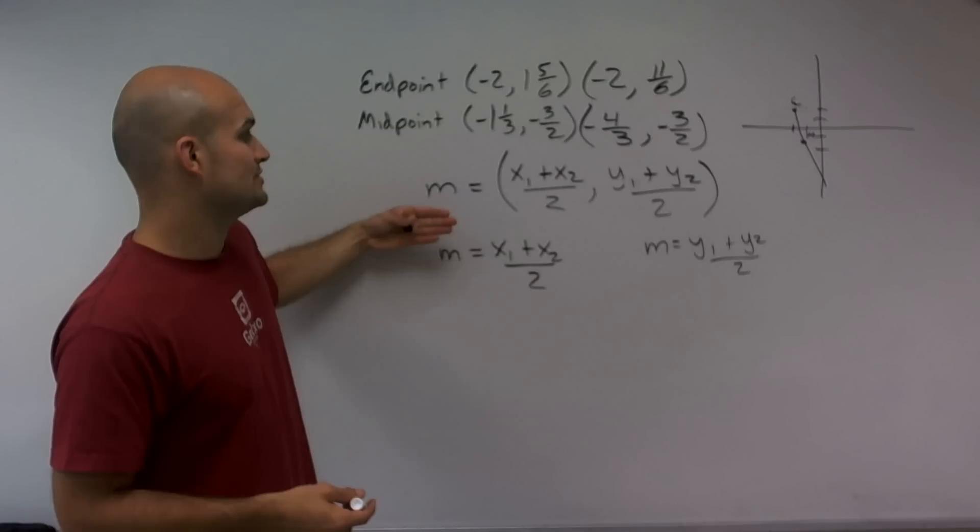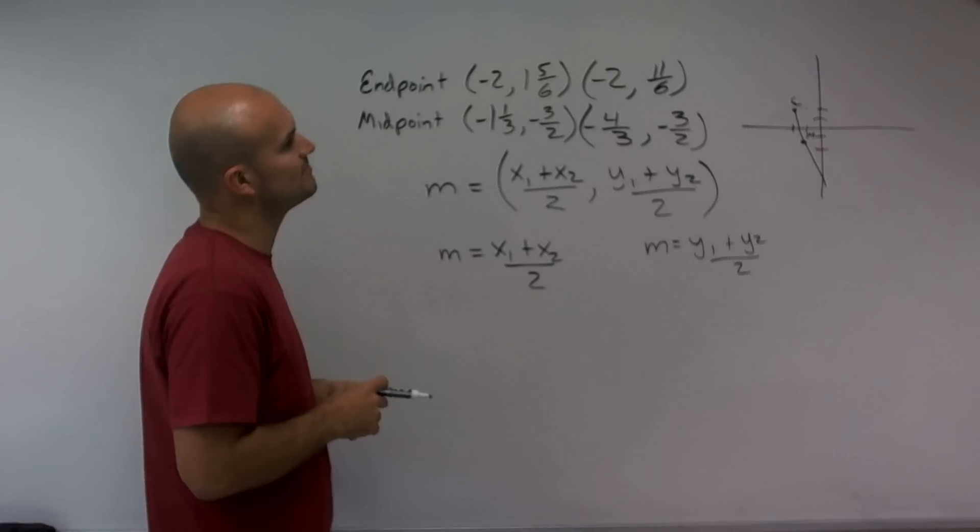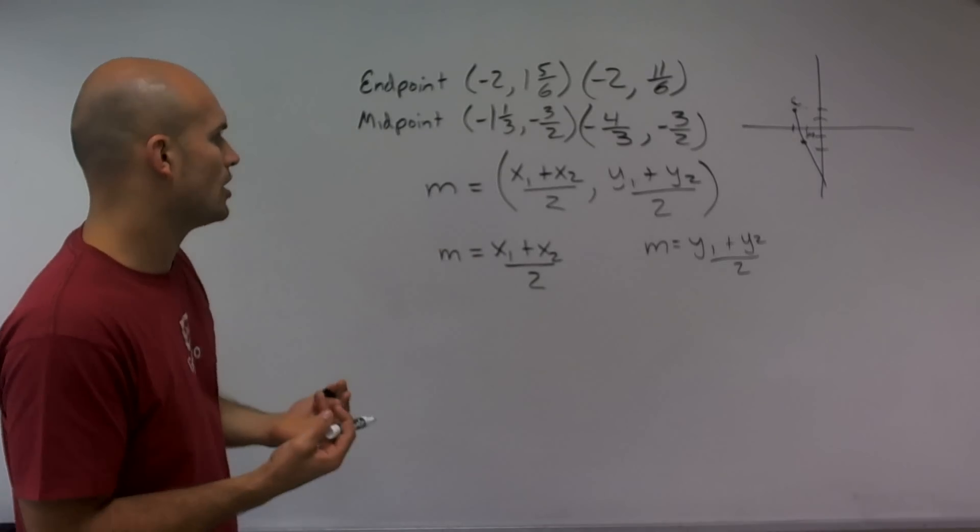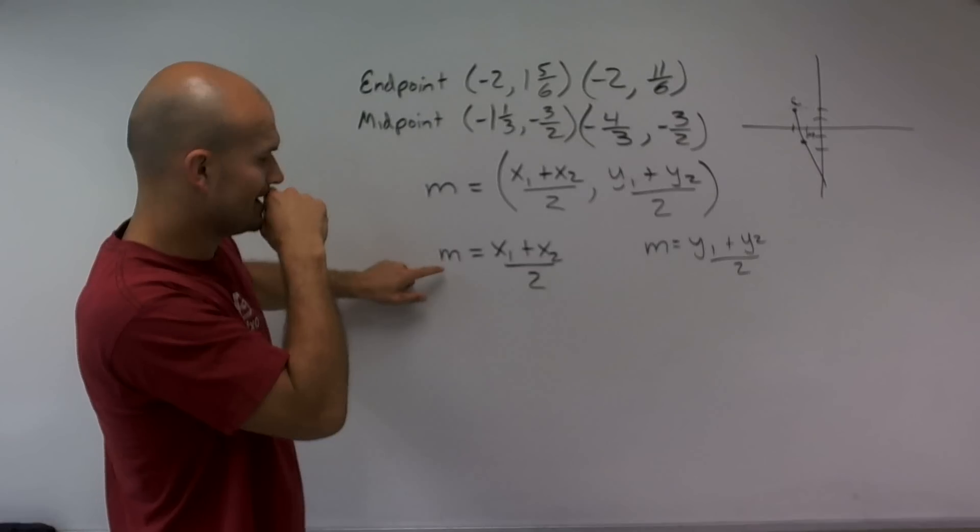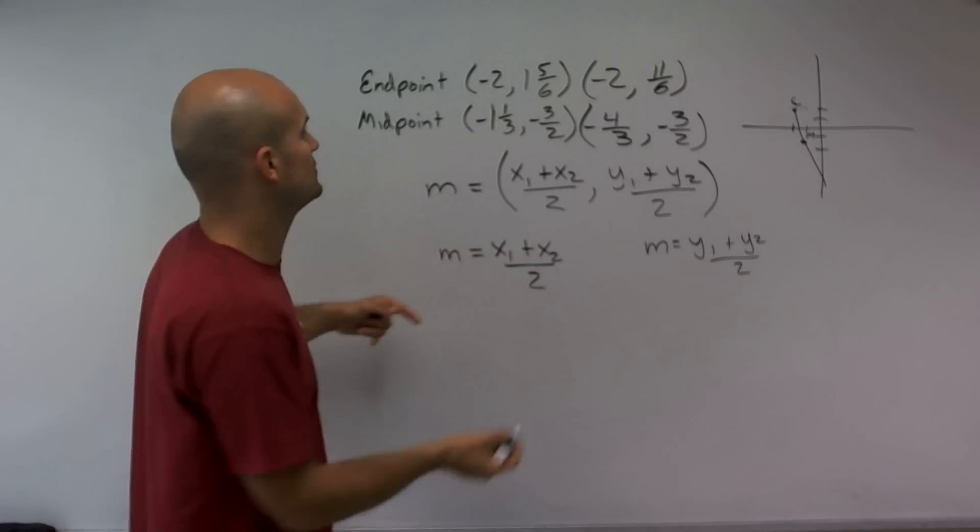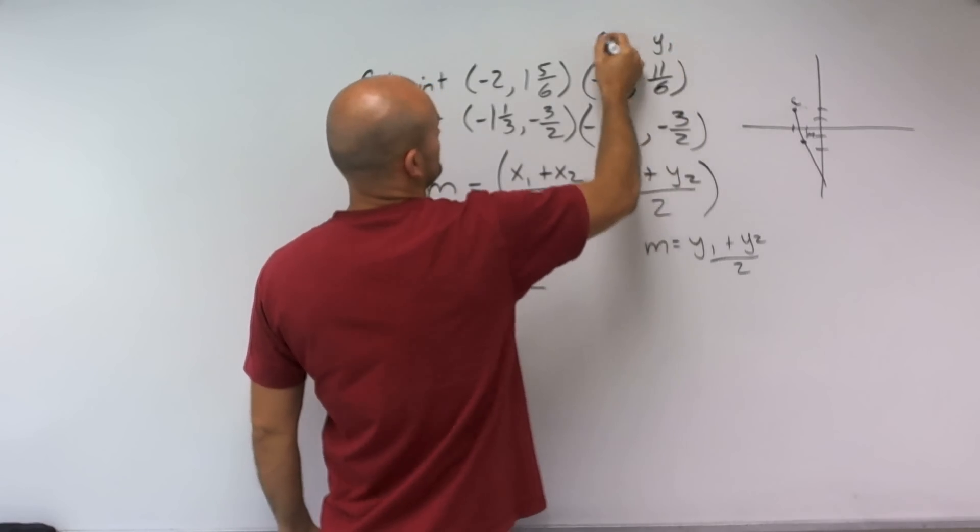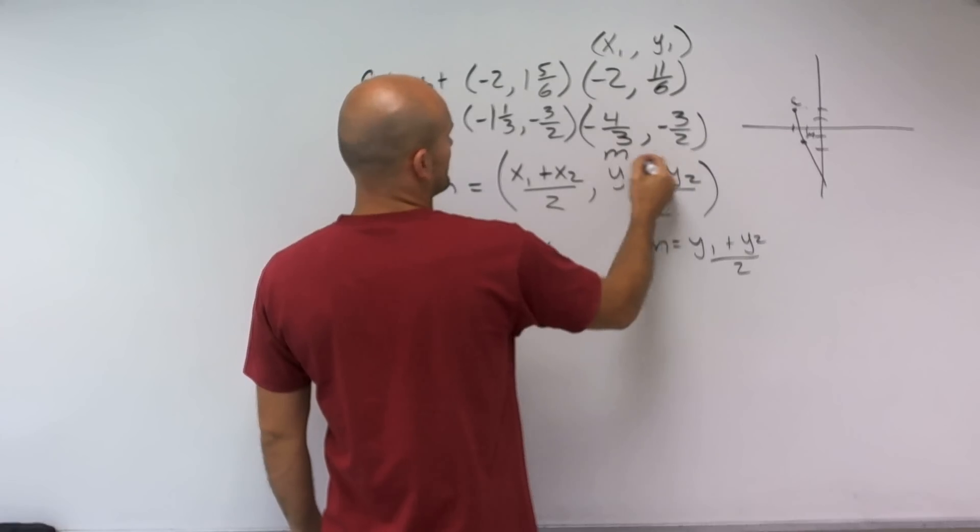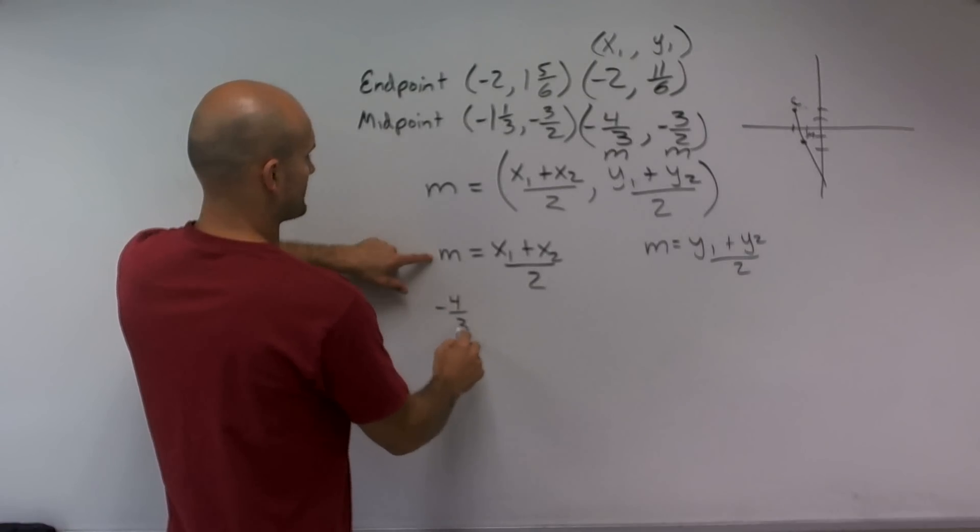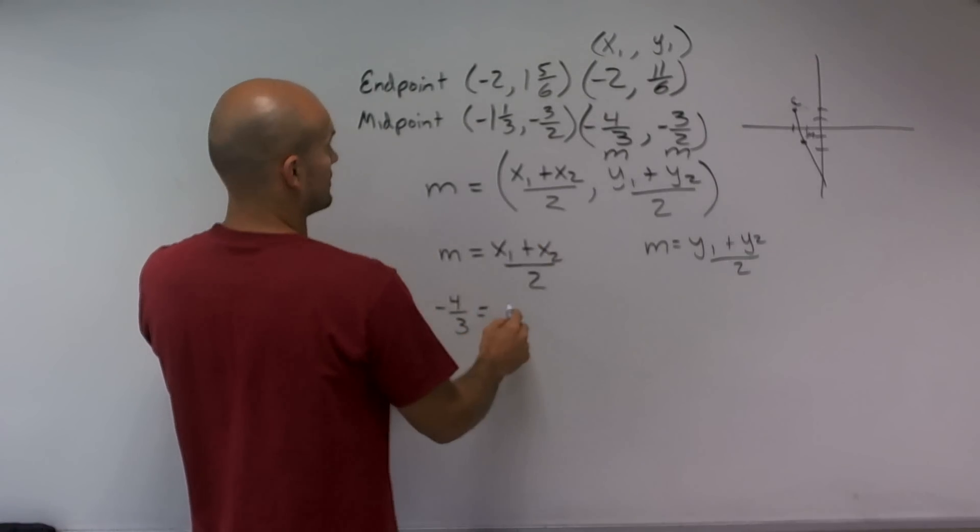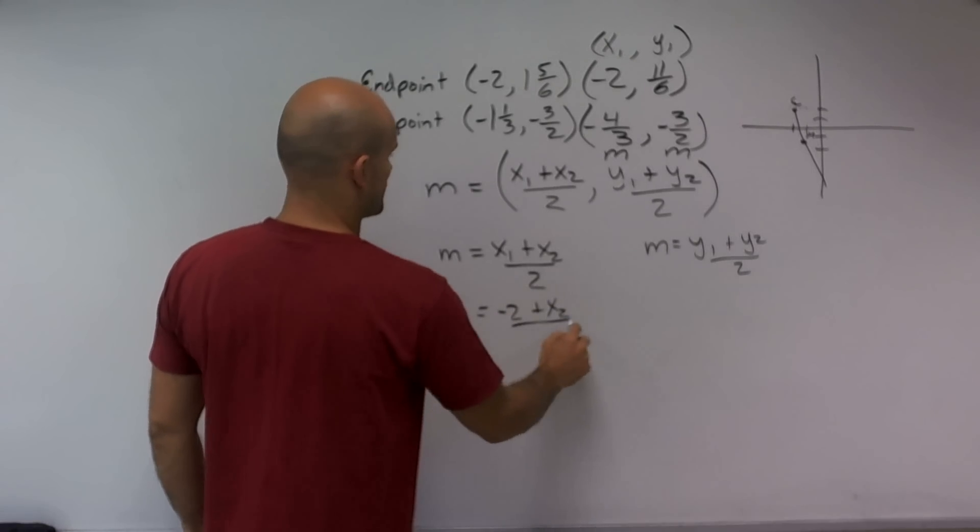So now we need to plug in what we do know. Let's figure out our midpoint, which is going to be m. So let's do the x coordinates. It doesn't matter if you label these as x1 or x2. Let's label the endpoint as x1 and y1. So the midpoint m, we have x values. I have negative 4/3 equals negative 2 plus x2 over 2.